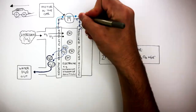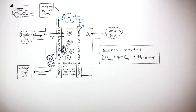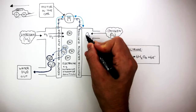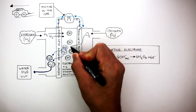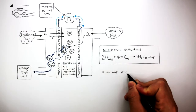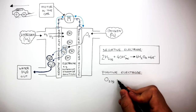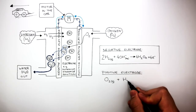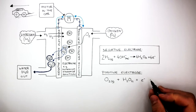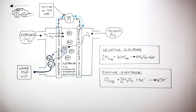The electrons continue to flow where they then reach the positive graphite electrode. The oxygen gas diffuses through the positive graphite electrode and into the electrolyte. At the positive electrode, the oxygen reacts with water where electrons are gained, and this forms four new hydroxide ions to keep the cycle going.